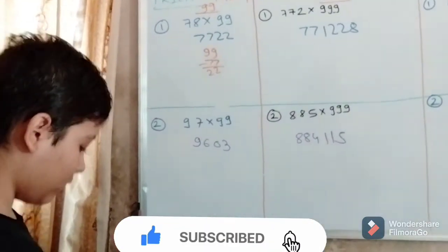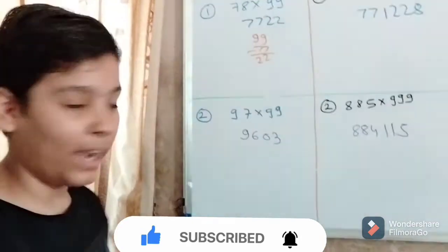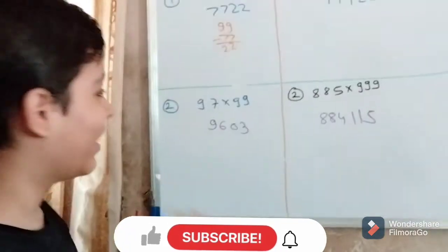97 into 99. So 97 minus 1 is equal to 96. 99 minus 96 is equal to 3, 03.